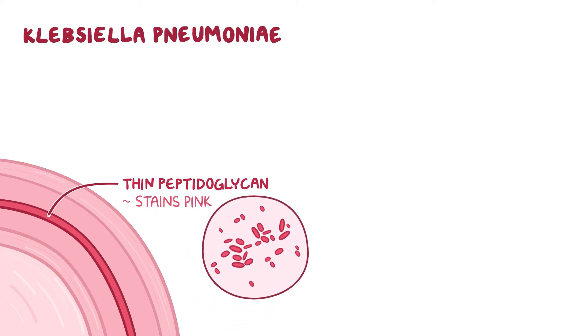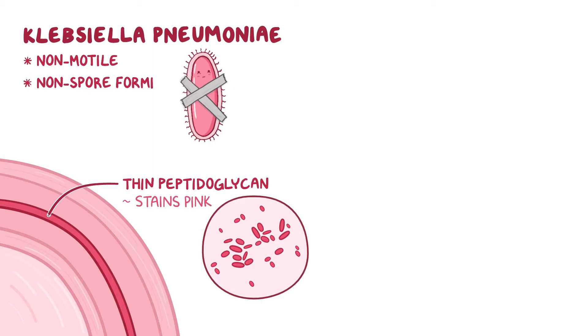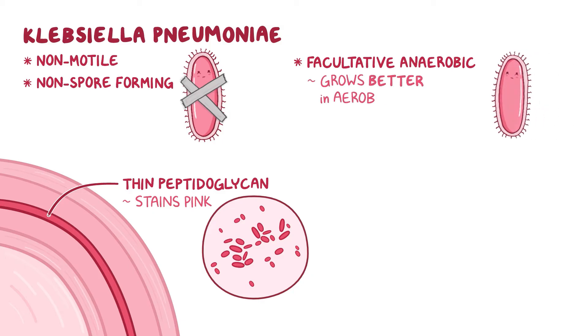Klebsiella pneumoniae is non-motile, non-spore-forming, and a facultative anaerobe. This means it can live even without oxygen, although it grows better in an environment that's aerobic.